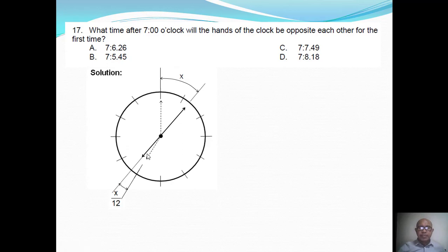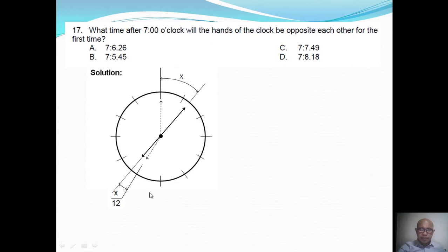So the next step is to form the equation. In this final position, when the hands of the clock are opposite to each other, the number of minutes in between the hour hand and the minute hand is 30 minutes. So we can write: x plus 30 minutes, that is equal to 35 plus x over 12.